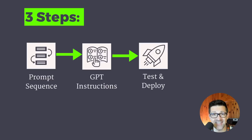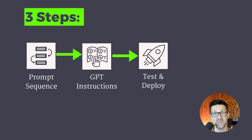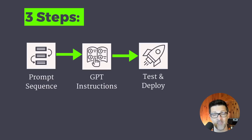There are three steps to getting this done. The first one is creating a prompt sequence that includes all of the prompts you need to get whatever process you're trying to automate done. Then we're going to convert that prompt sequence into a set of GPT instructions that can be used inside of a custom GPT — make sure to stick around to the end, I'll show you how to automate this step. Finally, we will be testing and deploying this GPT.